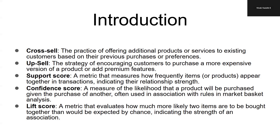Support score is a metric that measures how frequently items appear together in transactions, indicating their relationship strength. Confidence score is a measure of the likelihood that a product will be purchased given that another product was purchased, often used in association rules and market basket analysis.